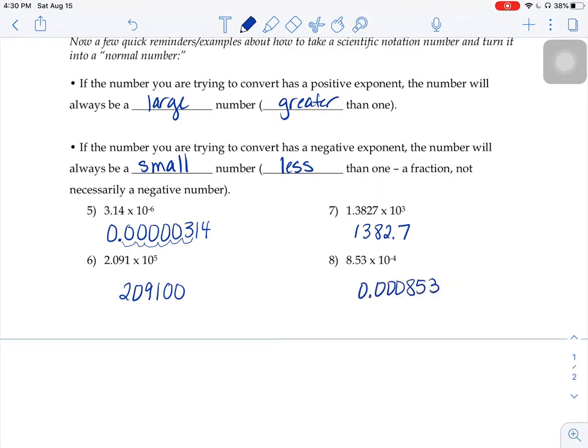You should get, for number 7, 1,382.7. That exponent is a positive 3. That means it's a relatively large number, so we want to move the decimal to the right. In number 8, we see an exponent of negative 4, a relatively small number. So move your decimal to the left.